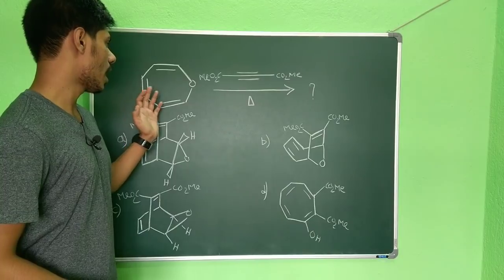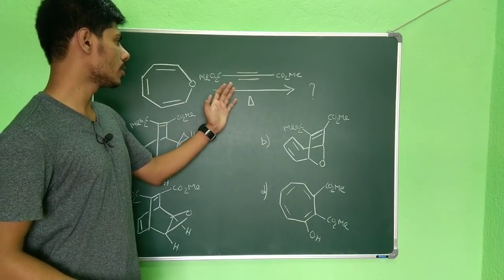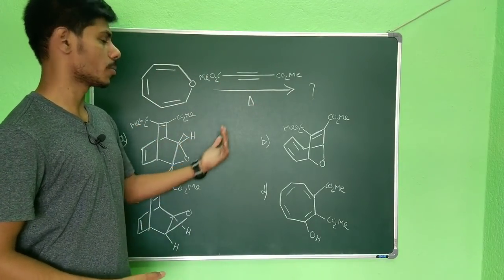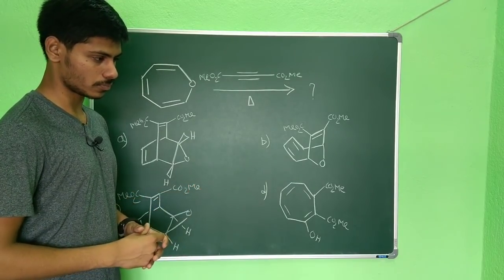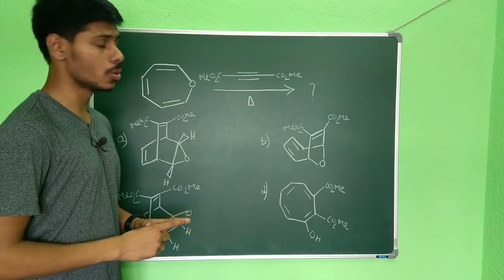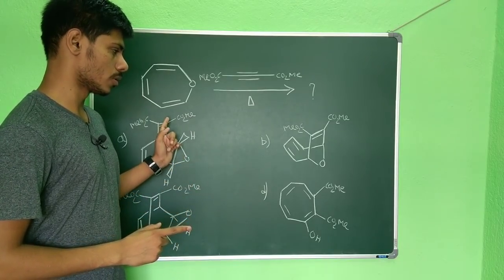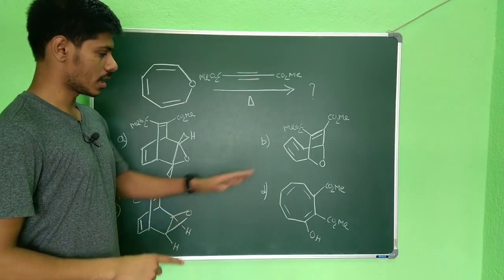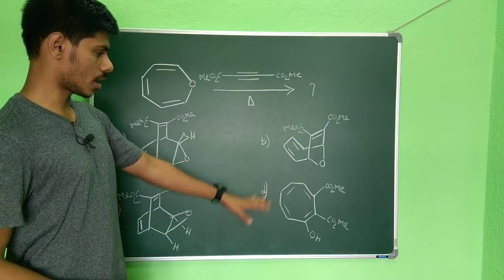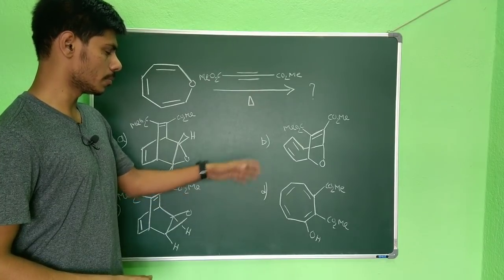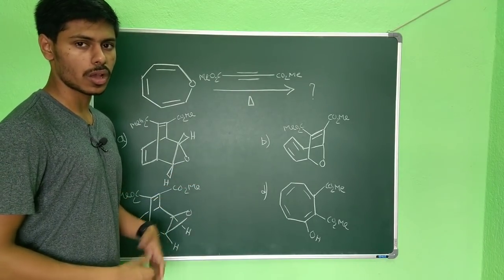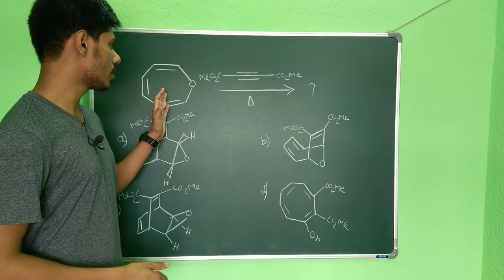You can see this is the problem given. This is a triene and it is reacted with this alkyne in the presence of heat, so what will be the product? The mistake you can make when solving this question is that these two options are looking so attractive that you can pick one of them, but it is actually wrong.